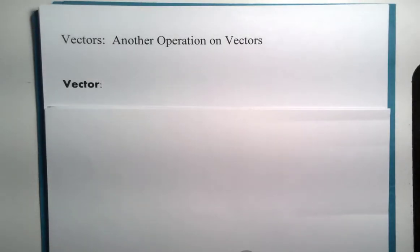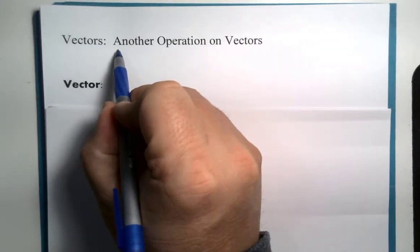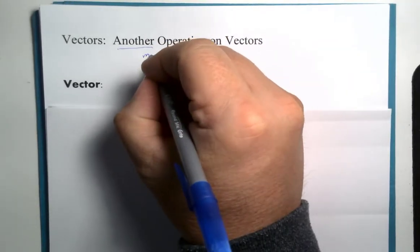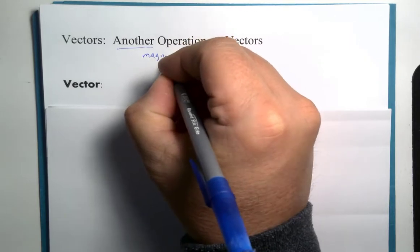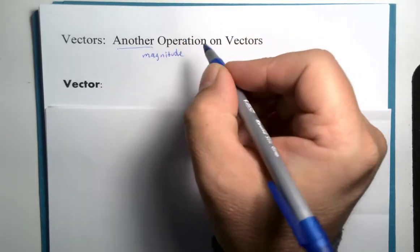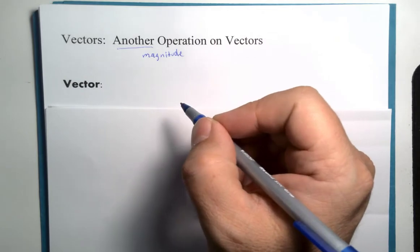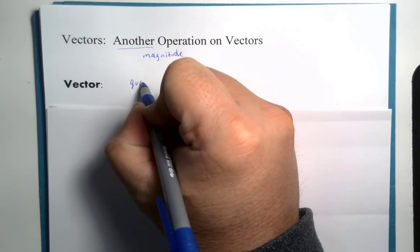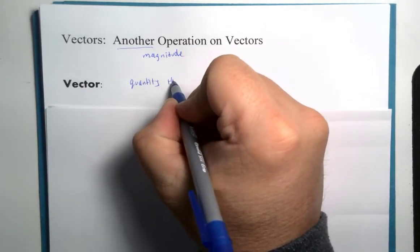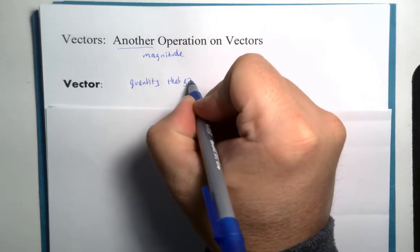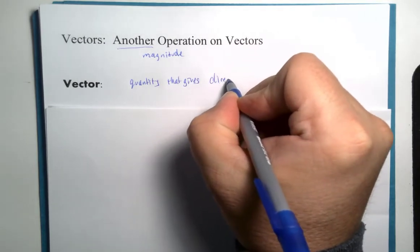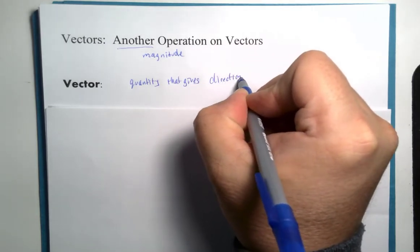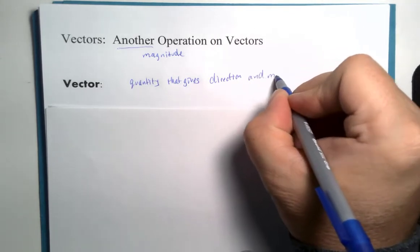We are ready for a look at another basic but extremely important operation on vectors. We already have magnitude, which in a visual case would be the length of the vector. The vector itself is that quantity that gives a direction and the magnitude.